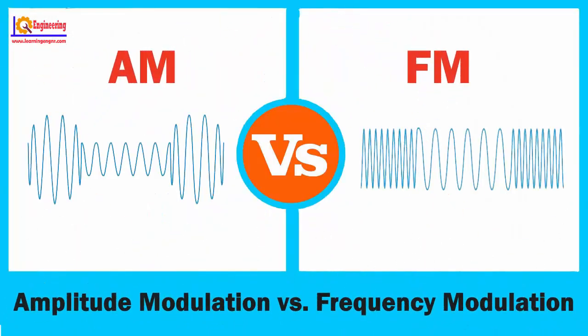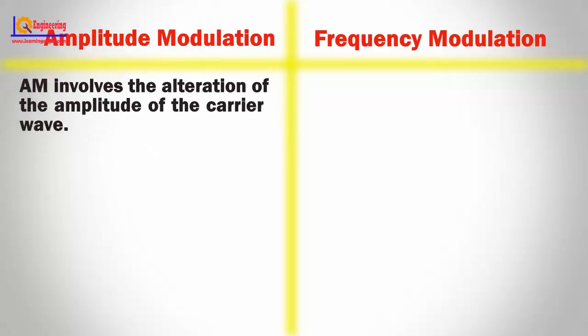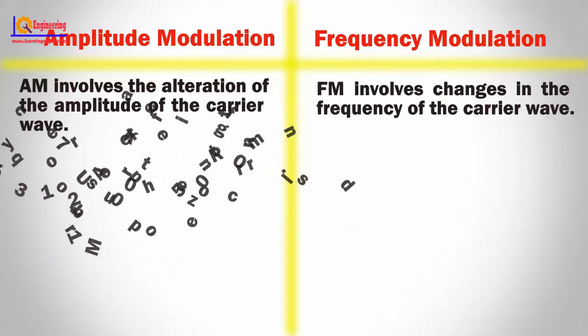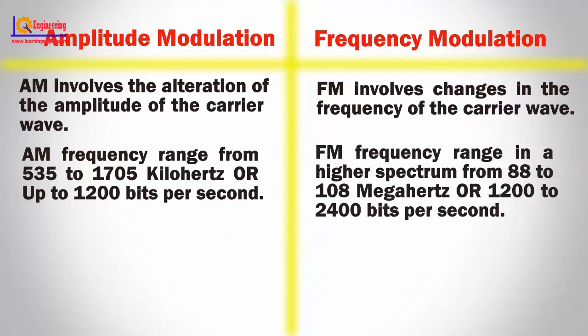In this video, I will briefly cover the differences between amplitude modulation and frequency modulation. AM involves the alternation of the amplitude of the carrier wave, whereas FM involves changes in the frequency of the carrier wave. AM frequency ranges from 535 to 705 kHz, or up to 1200 bits per second, whereas FM frequency range is a higher spectrum from 88 to 108 MHz, or 1200 to 2400 bits per second.